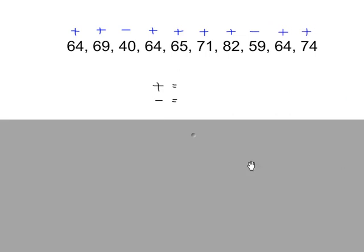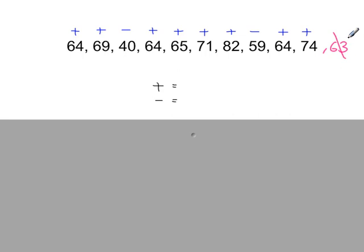If there was any value here that was equal to 63 — for example, if that last one there was 63 — we would just ignore it because it's not more than 63 and it's not less. So you would just ignore it like it's not even there in the first place.